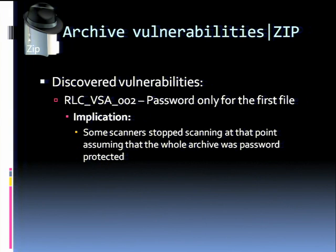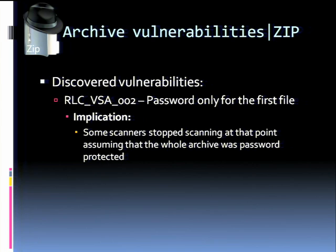The second vulnerability — anyone could have thought of this, but it was interesting to try. We partially protected an archive with a password: the first file, which was just an image, was password-protected, but all other files in the archive were not. You can extract them normally, but some antivirus vendors didn't correctly process this archive — they found the first file was password-protected and assumed the whole archive was.